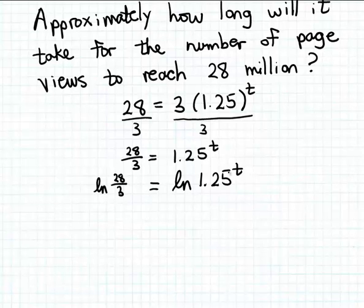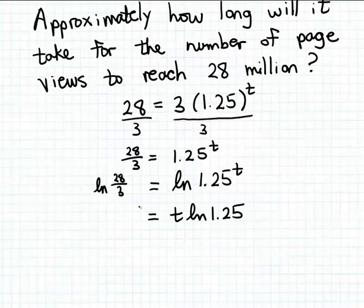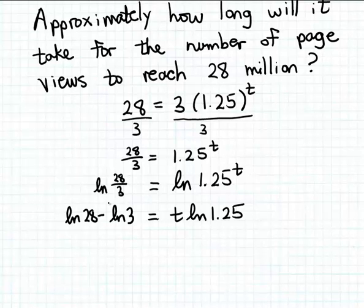Now we apply the exponent-to-coefficient property to bring the exponent T down as a coefficient: T times the natural log of 1.25 equals the natural log of 28 over 3. And as you'll recall, the natural log of a quotient equals the difference of the natural logs of the numerator and denominator. So natural log of 28/3 equals natural log of 28 minus natural log of 3.